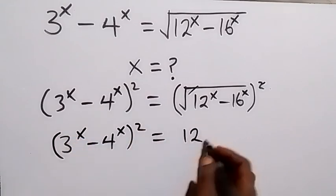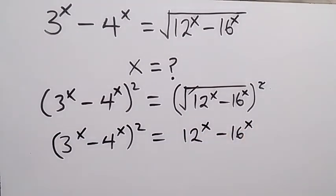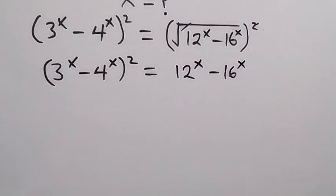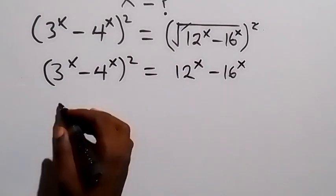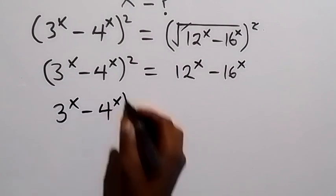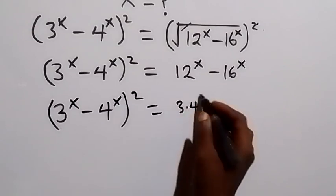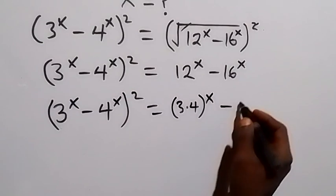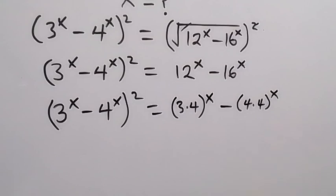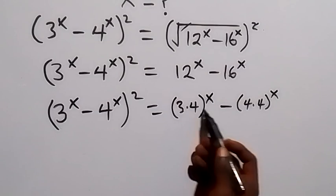So (3^x minus 4^x) squared equals 12^x minus 16^x. We can write 12 as 3 times 4, and 16 as 4 times 4. This becomes (3×4)^x minus (4×4)^x. From the law of indices, this power of x affects each number.